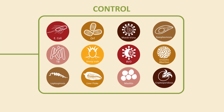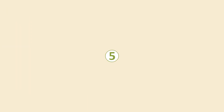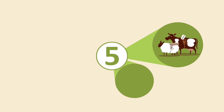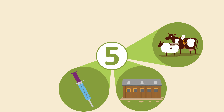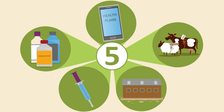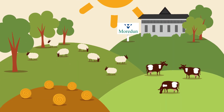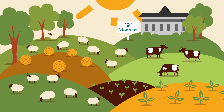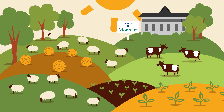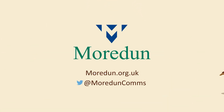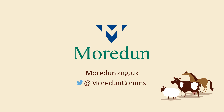By following the Biosecurity Big Five, you can prevent or control many key diseases — always remember to check information on each specific disease. So follow the Biosecurity Big Five checklist: Livestock Movement, Quarantine, Diagnostic Tests and Preventative Vaccines, Hygiene, and Health Plans. At Morden, we are continuing to research into many key livestock diseases, focusing on diagnostics, vaccines and disease control strategies, all aimed at improving disease prevention in your flocks and herds. If you'd like more information on biosecurity advice, please visit the Morden website.